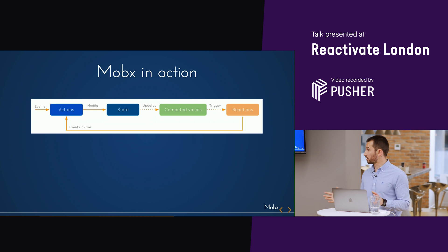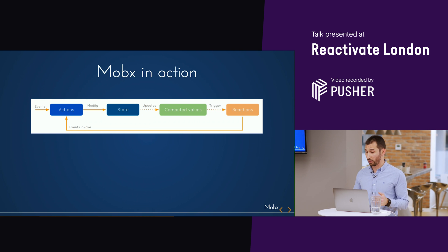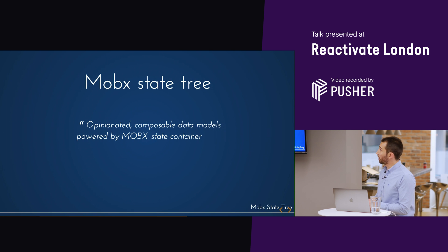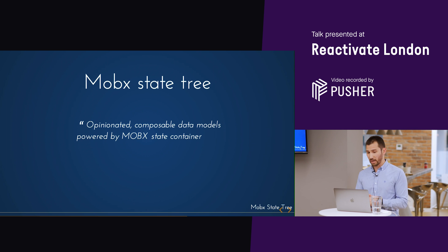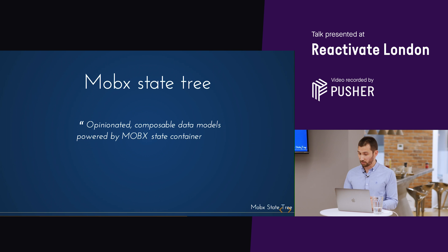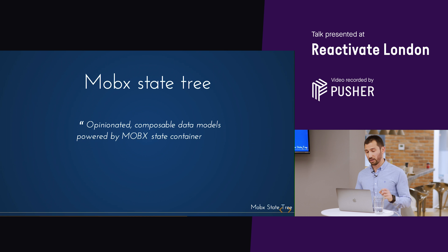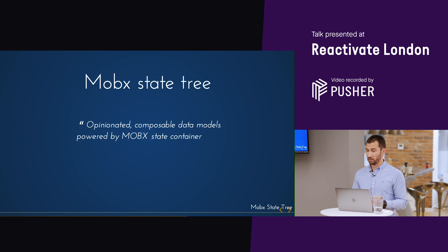MobX is basically this — it allows us to take advantage of reactive programming, but it's too flexible, giving too much room to play with. That's why the same creator created MobX State Tree. MobX State Tree is an opinionated, composable data model that sits on top of MobX. MobX gives us the reactive programming, and State Tree gives us the structure.